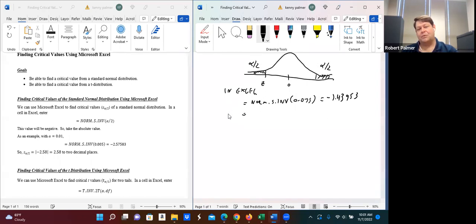And so then our Z of alpha over 2, we take the absolute value of that. These are identical. This is symmetric. And so let's round it off to two decimal places. It's going to be absolute value of negative 1.43953, so round it off and it's going to be 1.44. So that's our Z of alpha over 2.